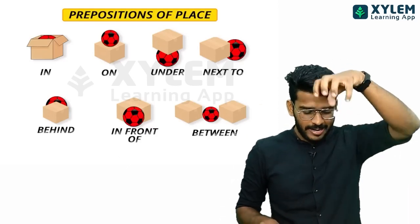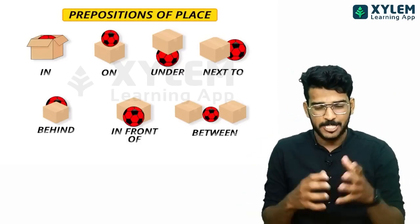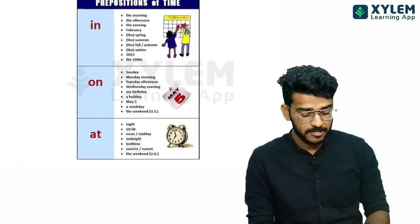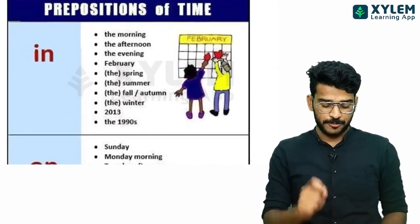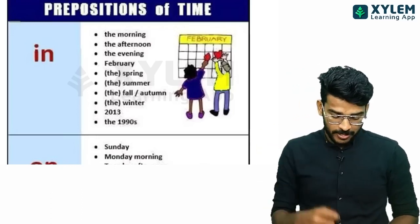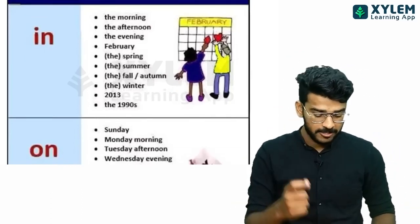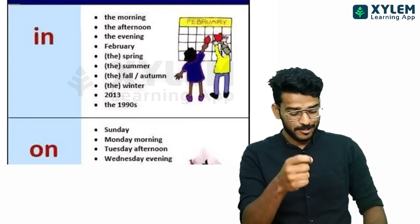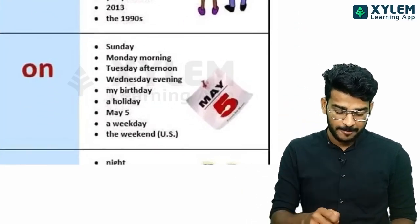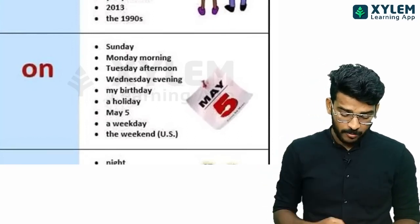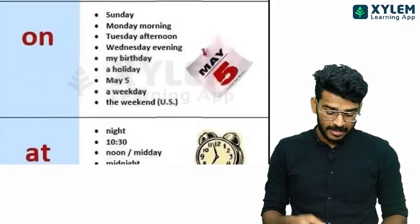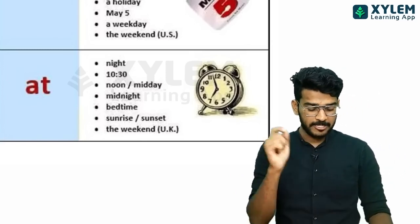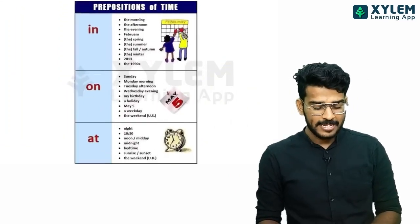This is a preposition of places — next to, behind, in front of, between. This is a preposition of time: in the morning, in the afternoon, in the evening, in February, in January, in the spring, in the summer, in the fall, in the autumn, in the winter, in the 1990s, in 2013. On Sunday, on Monday morning, on Thursday morning, on Tuesday morning, on Wednesday evening, on my birthday. At night, at noon, at bedtime, at the weekend.